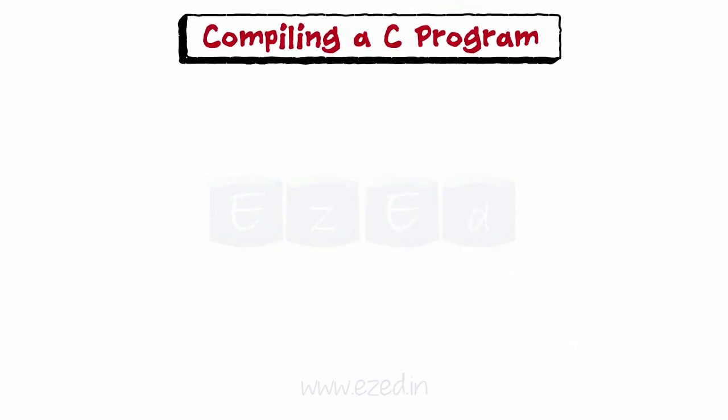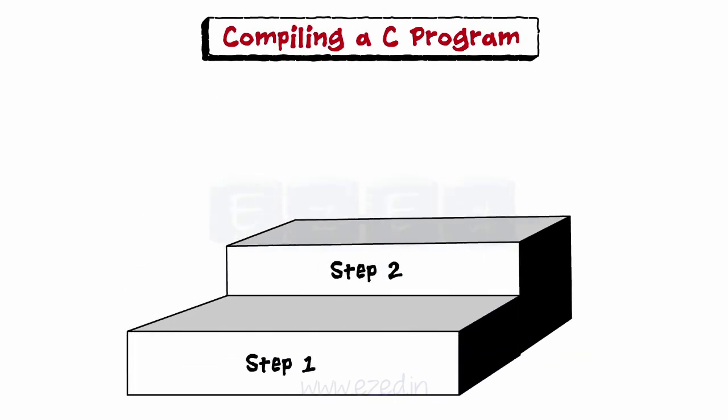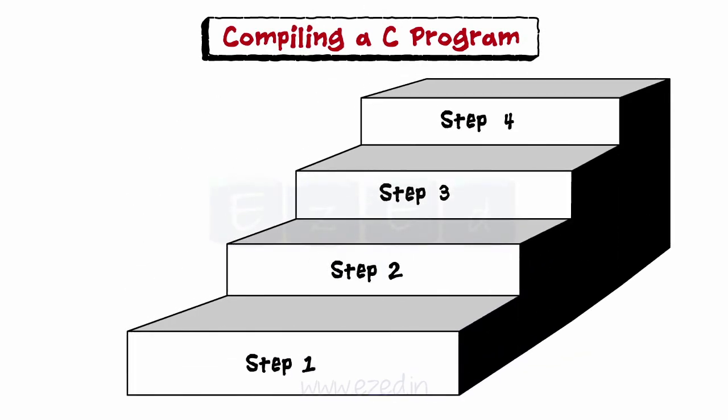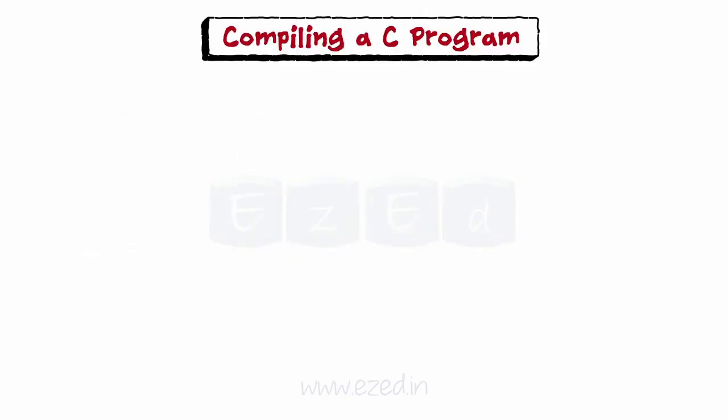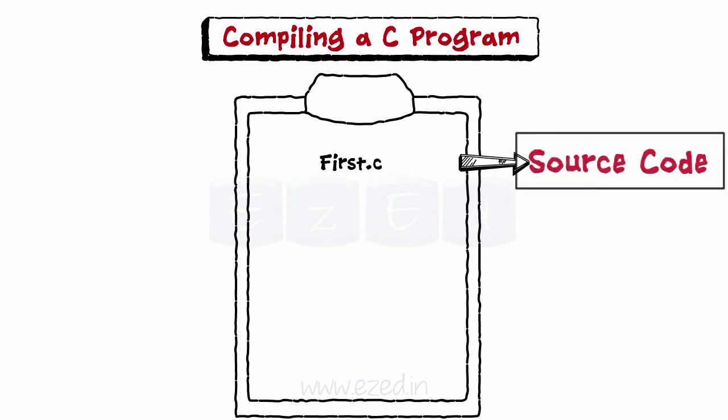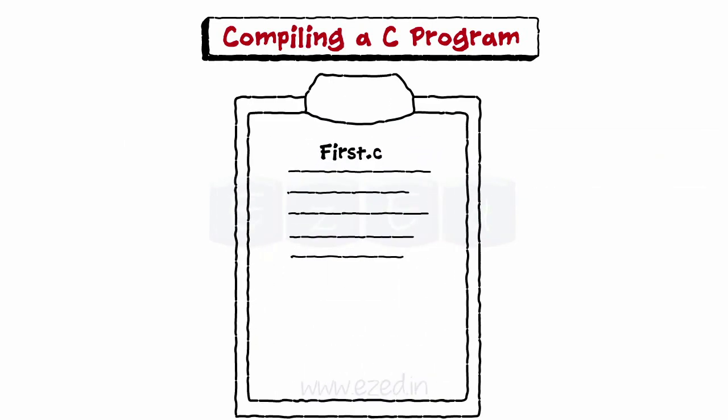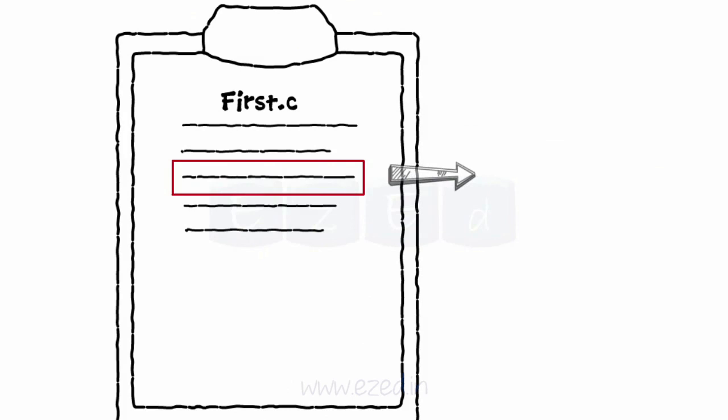Let's learn the compiling process of a simple C program. We have divided the entire process into steps. The C program is written in an editor and saved with .C extension. This is called a source code, example, first.C. Further changes to the source code can be made by opening the editor and modifying it.